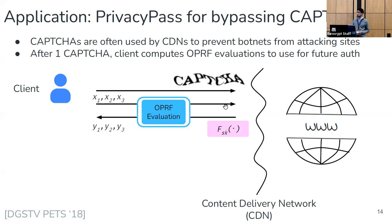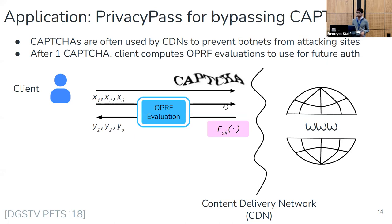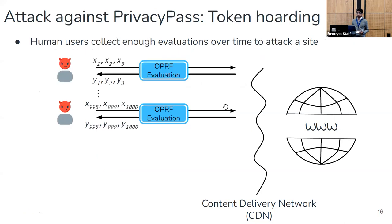What Privacy Pass does is: once a user passes a CAPTCHA challenge, they can undergo an evaluation of an OPRF held by the CDN. The user learns evaluations y1, y2, etc. for a batch of inputs x1, x2. Later, when the user wants to make a web request, they can spend these tokens — these evaluation pairs (x, y) — to prove to the CDN that they passed a CAPTCHA in the past. The CDN verifier can verify that the (x, y) pair is a valid evaluation, then stores x on a strike list to prevent double authentication. Because of the oblivious evaluation property, the CDN can't link the token being spent to the time of oblivious evaluation at some earlier point. Privacy Pass has been deployed by Cloudflare for a couple of years.